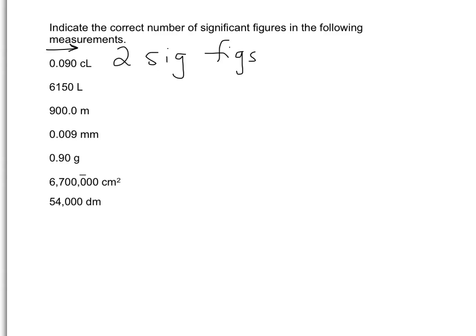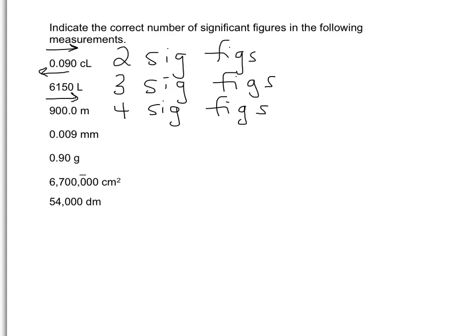6,150 — no decimal point, so we count to the left. This one has three significant figures. 900.0 meters has a decimal point — dot right — four significant figures. 0.009 — decimal point, count to the right — one significant figure.